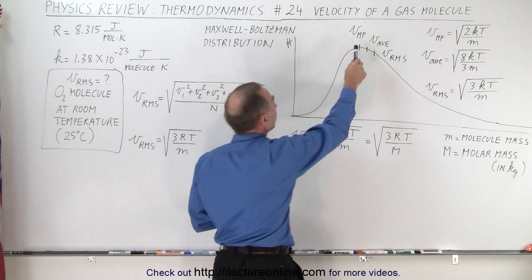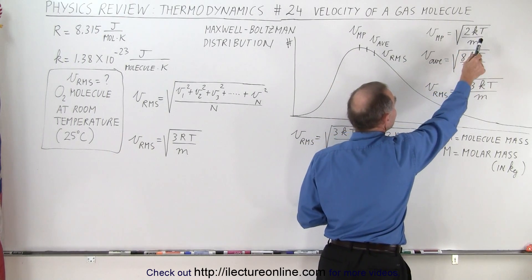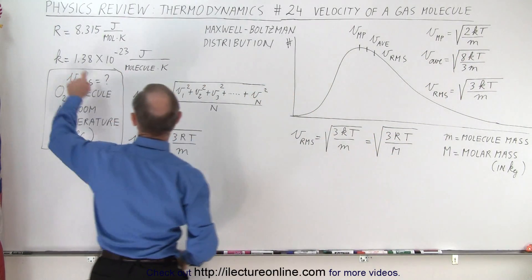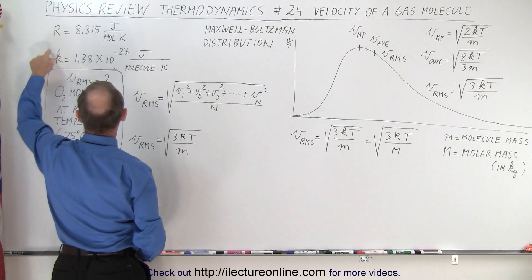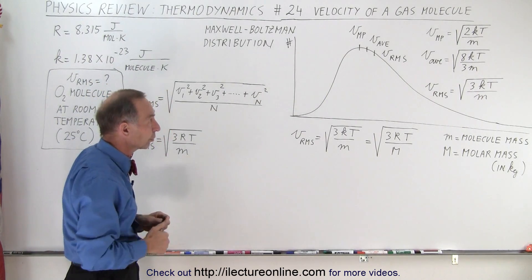And that's called the most probable velocity. The equation for that is the square root of 2kT over m, where k is the gas constant divided by Avogadro's number, to get the gas constant for a single molecule instead of a mole of molecules.